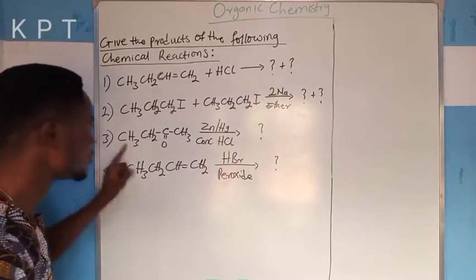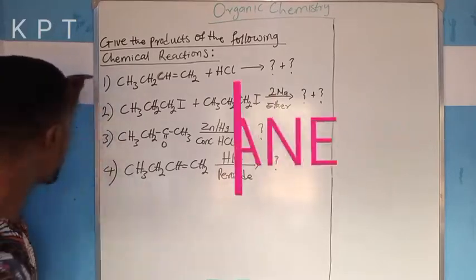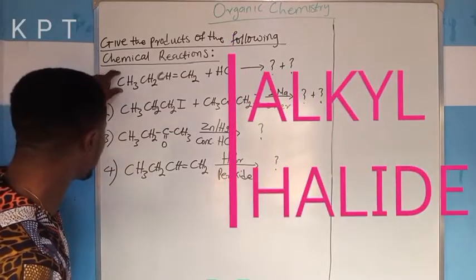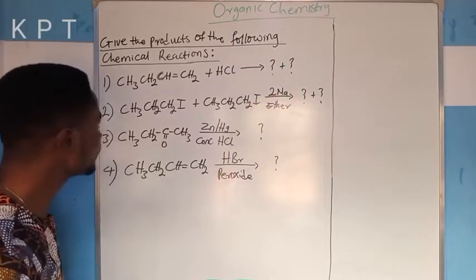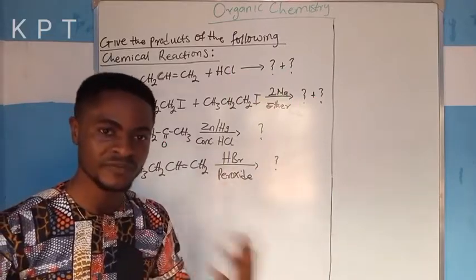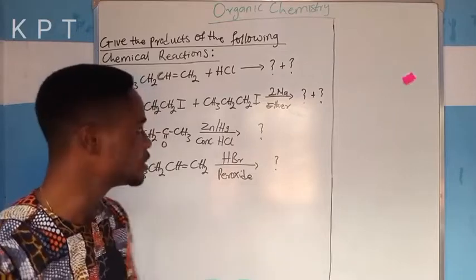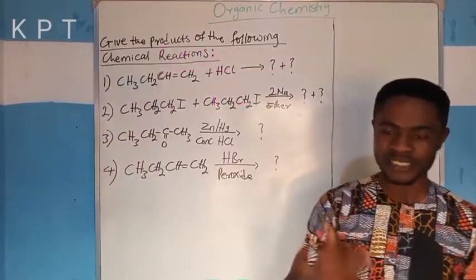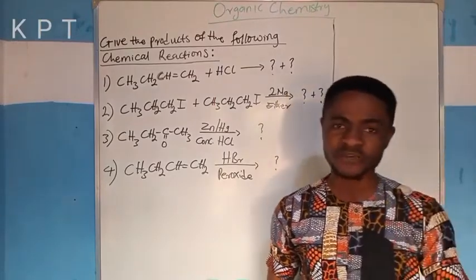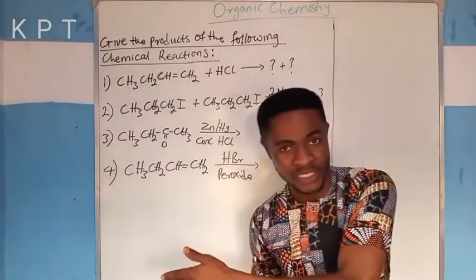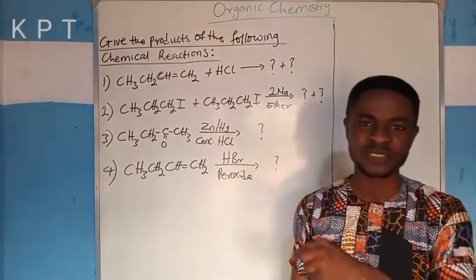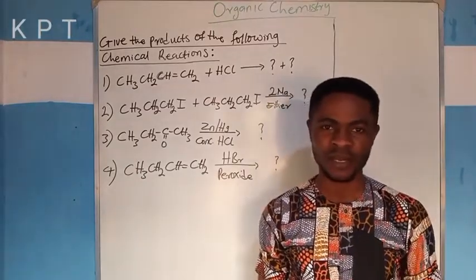The second and the third reactions lead to the formation of alkene, while the first and the fourth lead to the formation of alkyl halide. Now, focus attention on the first and on the fourth. This Markovnikov's rule states that during the reaction of alkene with hydrogen halide, the hydrogen from the hydrogen halide will enter into the carbon of the alkene with more number of hydrogen, while the halogen will enter into the carbon with less number of hydrogen.